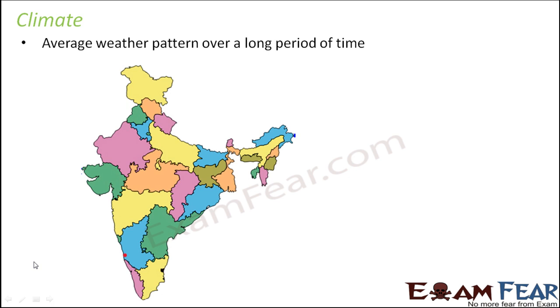So climate can be defined as the average weather pattern over a long period of time. When we say climate, it is something like this. Let us suppose if you talk about Jammu and Kashmir.